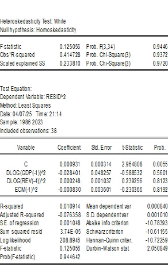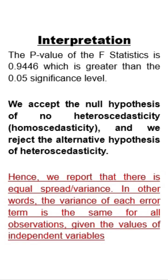How do we interpret this? The p-value of the F-statistic is 0.9446, which is greater than the 0.05 significance level. We accept the null hypothesis of no heteroscedasticity, or homoscedasticity, and we reject the alternative hypothesis of heteroscedasticity. Hence, we report that there is equal spread of variance in the model — in other words, the variance of each error term is the same for all observations given the values of the independent variable.